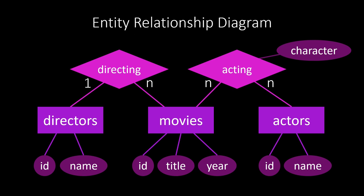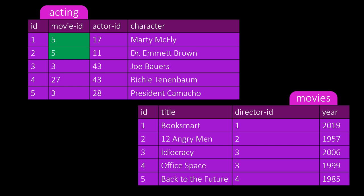Note that each entity in an ER diagram usually has its own table in the database. Many-to-many relationships such as acting usually also have their own table. For one-to-many relationships such as directing, this is not necessarily true — we can have a specific directing table, or simply write the director ID into the movies table as we did before. To demonstrate many-to-many relationships, let us look into the acting table. Actors 11 and 17 have acted in the same movie 5, and actor 43 has acted in movies 3 and 27, so this relationship table is indeed many-to-many.